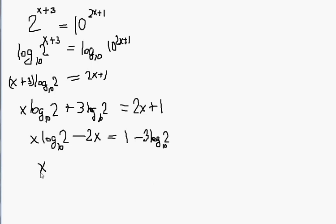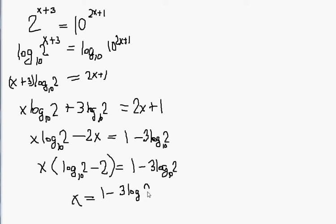So on the left-hand side, I can factor out the x, and then finally divide so that x is equal to 1 minus 3 times the logarithm of 2 base 10, divided by the logarithm of 2 base 10 minus 2. So that is the answer for x. I also showed what the answer isn't and a common mistake that appeared when applying the rules for logarithms.